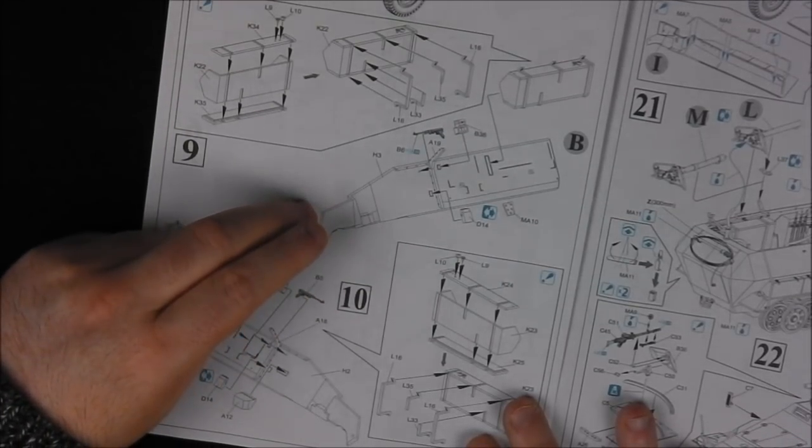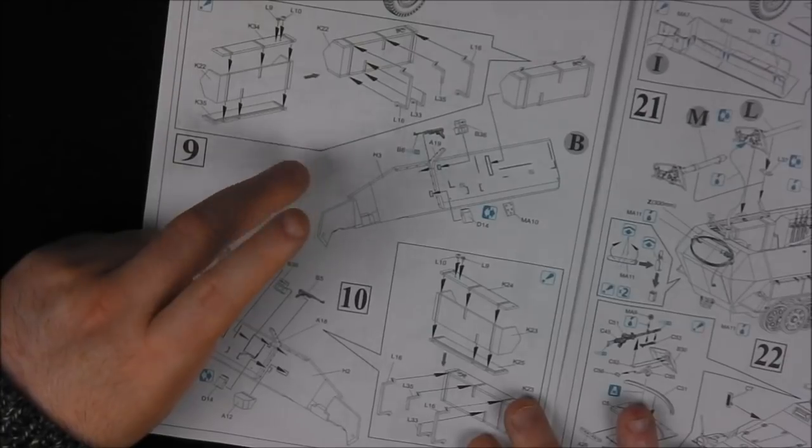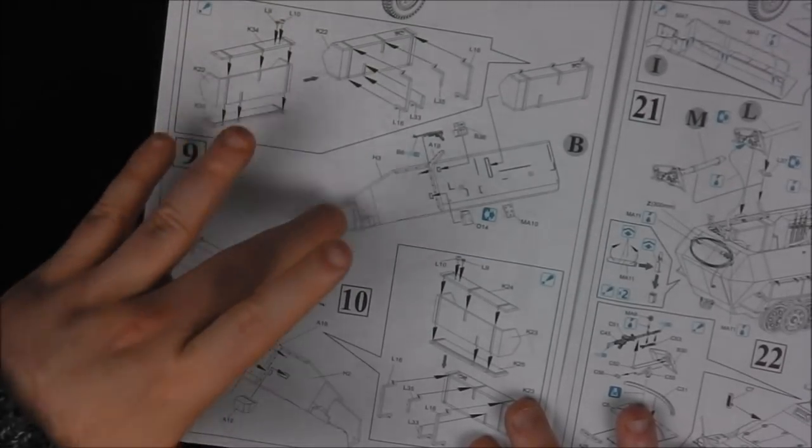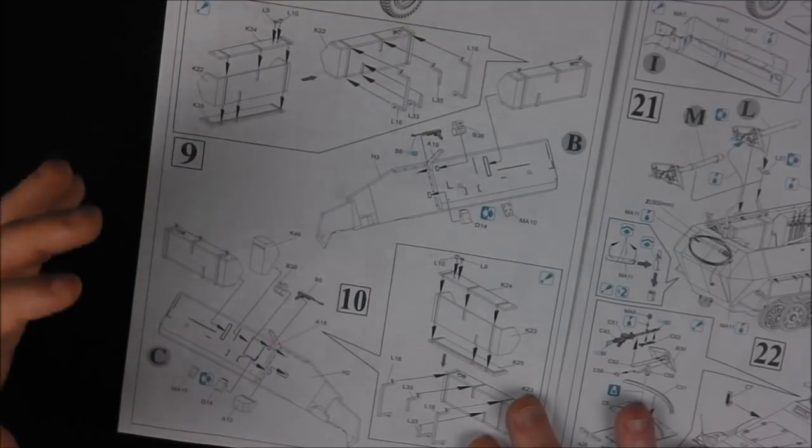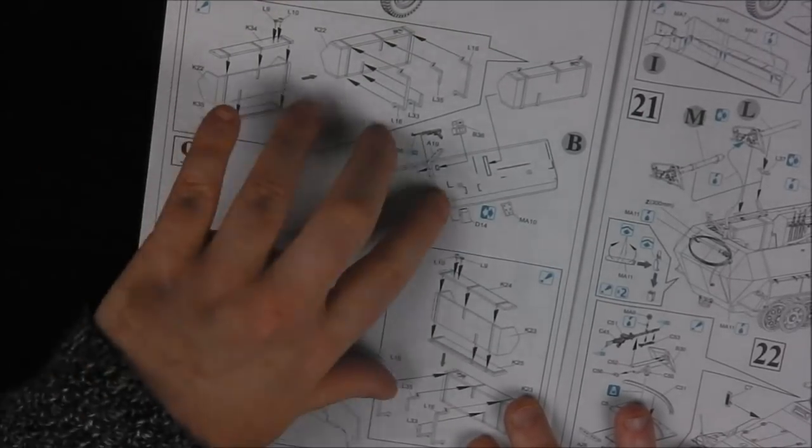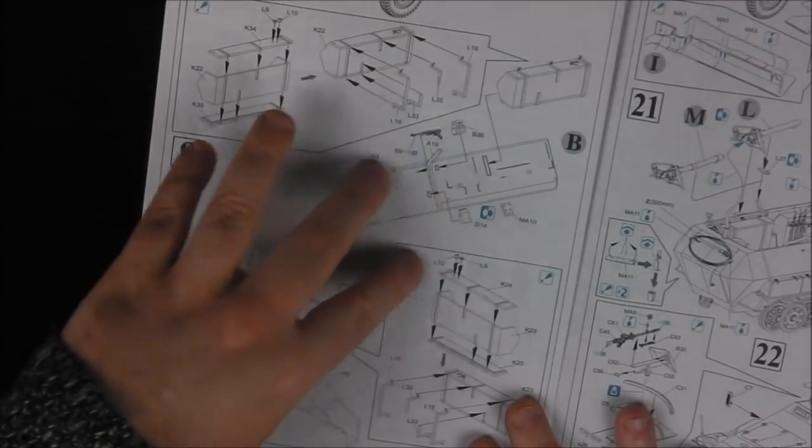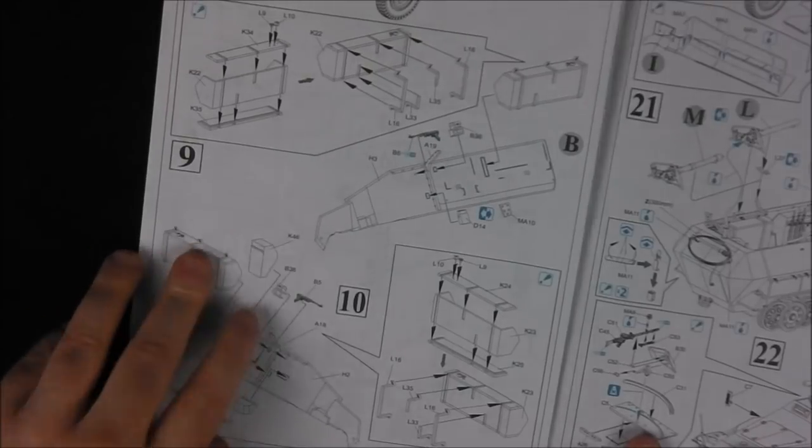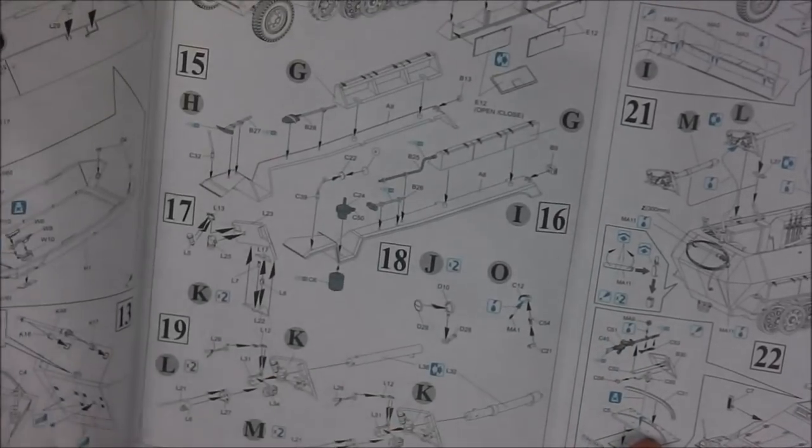Now we're moving on to step nine and ten and we're adding these large fuel tanks to the hull sides. So the difference between the AFV Club 251Cs and the Dragons is that Dragon actually does each hull wall separately, which actually is a little bit more advantageous to us, the modeler, because we can build these in their entirety, weather them, paint them and then assemble them together. It just makes life a little bit easier for us if you choose to build the sub-assemblies.